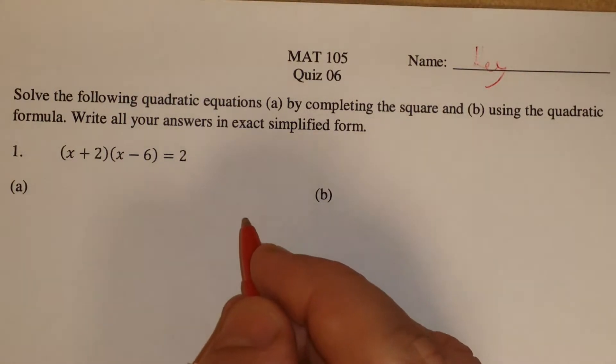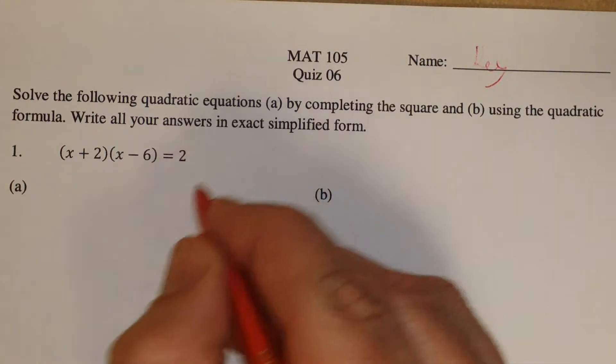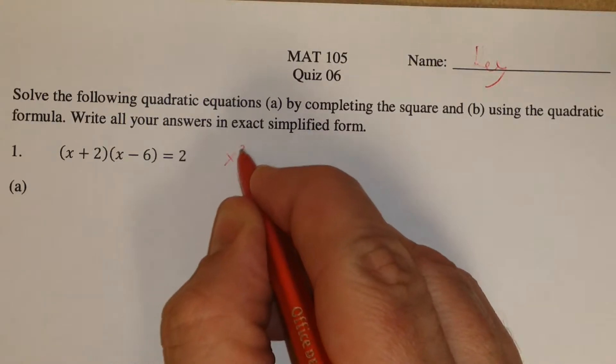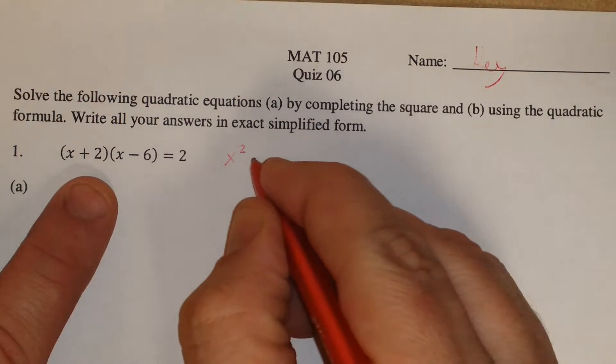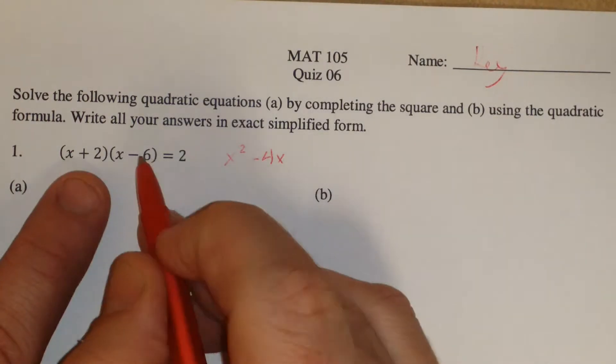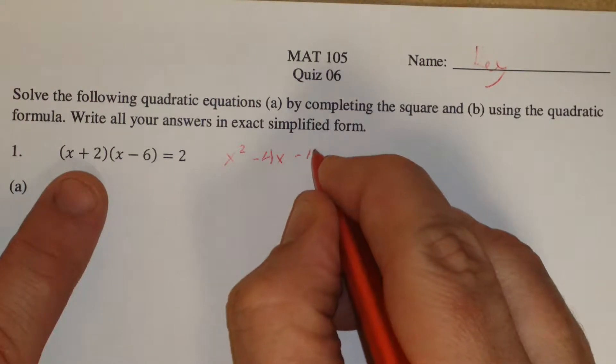What we've got to do first is expand it out. So if we do that, we would get x squared, then minus 6x plus 2x would be minus 4x. We'd have a minus 12, and then I'd subtract a 2, so I'd actually get a minus 14.